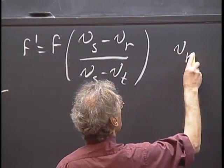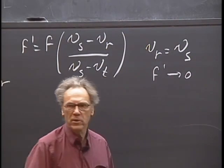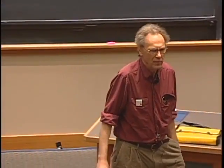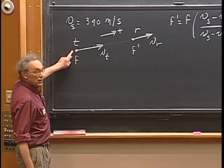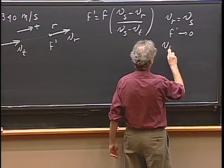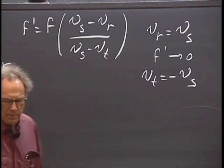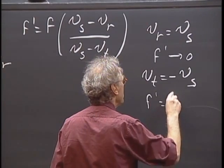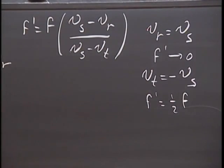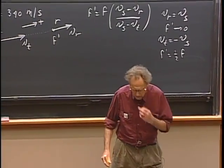Suppose I make vr the same as vs — the numerator becomes zero, so f prime goes to zero. That's obvious: if you walk away from the sound source with the speed of sound, the sound never reaches you. But if the sound source goes away from you with the speed of sound — so the transmitter velocity is minus the speed of sound — then the frequency you receive is simply one-half of f. So you walk away from the source at the speed of sound and you hear nothing, while if the sound source moves away at the speed of sound, you hear half the frequency. An enormous difference.